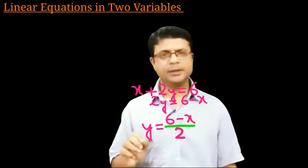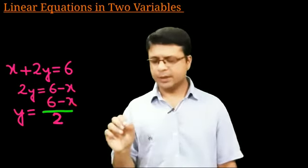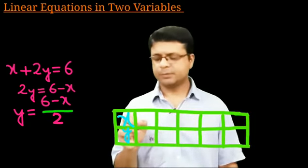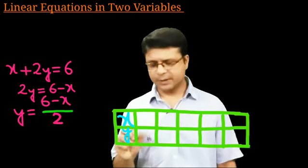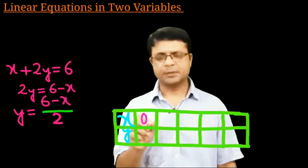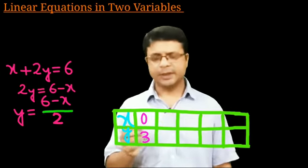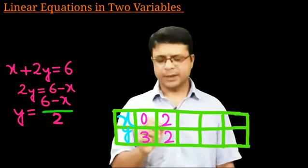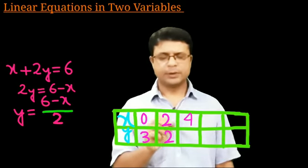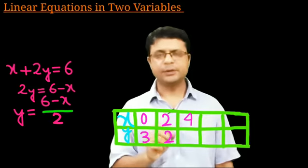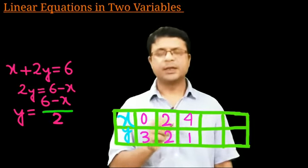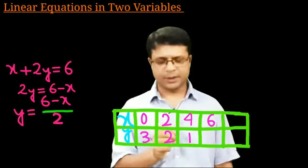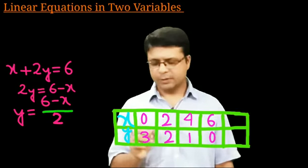Let us draw a solution table with values of x and y. If x = 0, then y = 6/2 = 3. If x = 2, then y = 4/2 = 2. If x = 4, then y = 2/2 = 1. If x = 6, then y = 0/2 = 0.